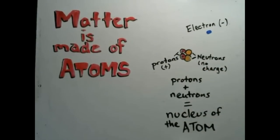And protons and neutrons together make the nucleus, or center of the atom. Now, this is a helium atom: two protons, two neutrons, and two electrons.